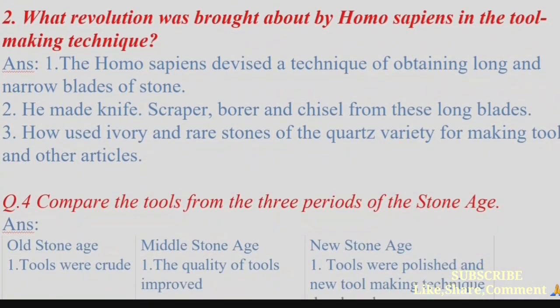(2) What revolution was brought about by Homo sapiens in the tool-making technique? Answer: Homo sapiens devised a technique of obtaining long and narrow blades of stone. He made knives, scrapers, borers, and chisels from these long blades. He also used ivory and rare stones of the chert variety for making tools and other articles.